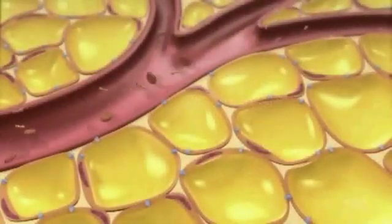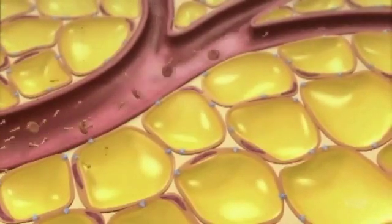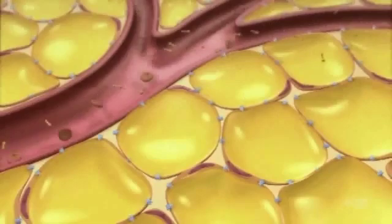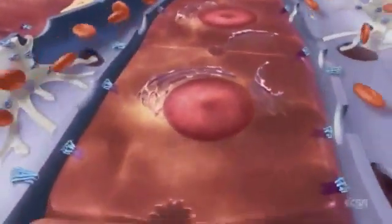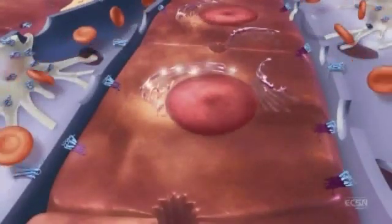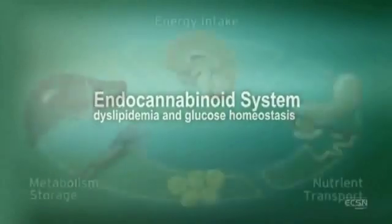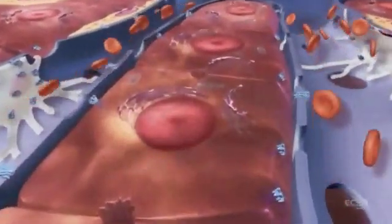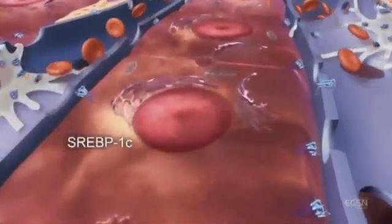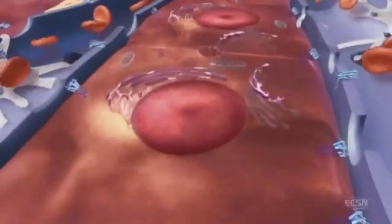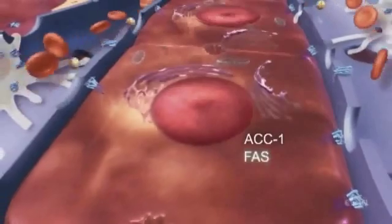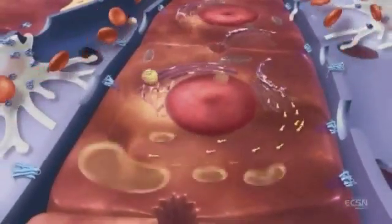ECS regulation of peripheral metabolism influences energy balance. Stimulation of the ECS increases food intake and adiposity. Conversely, blocking CB1 receptors reduces food intake and adiposity. In the liver, ECS stimulation can lead to lipogenesis through the activation of hepatic lipogenic enzymes and increased fatty acid synthesis. Chronic stimulation of the ECS is associated with dyslipidemia. Activation of CB1 receptors increases expression of SREBP1C, a lipogenic transcription factor, and increases fatty acid synthesis. SREBP1C increases production of lipogenic enzymes, ACC1, and fatty acid synthase. Increased fatty acid synthesis can lead to production of large triglyceride-rich VLDL.